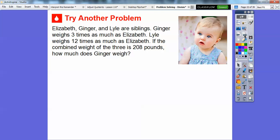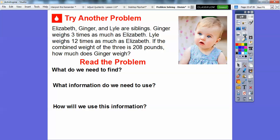Let's try another one, you guys. So here we have Elizabeth, Ginger, and Lyle are siblings. Ginger weighs three times as much as Elizabeth. Lyle weighs 12 times as much as Elizabeth. If the combined weight of these three is 208 pounds, how much does Ginger weigh? Let's answer some questions. What do we need to find?